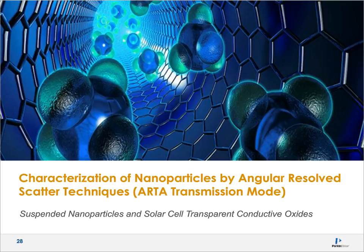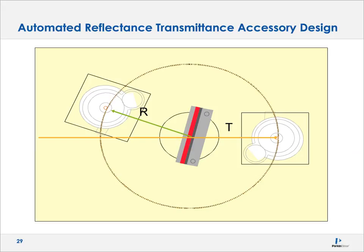We're now moving to characterization of nanoparticles by angular resolve scattering techniques, involving an accessory called an ARTA — automated reflectance transmission accessory. We'll first look at suspended nanoparticles and then solid nanoparticles, specifically solar cell transparent conductive oxides. The ARTA has a movable integrating sphere detector able to move around the sample in 360 degrees. The sample itself on the center stage can also move through 360 degrees. We can change the angle of incidence by rotating the center table, or change the collection angle, with configurations for both transmission and reflectance modes.